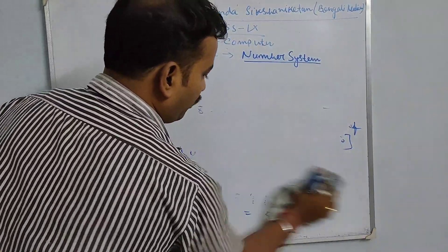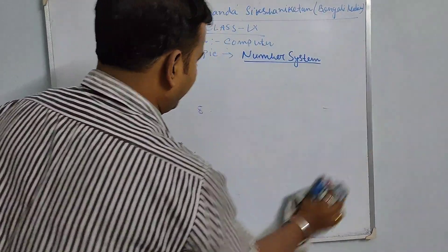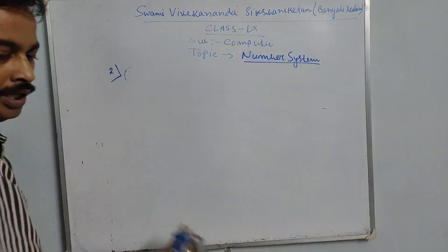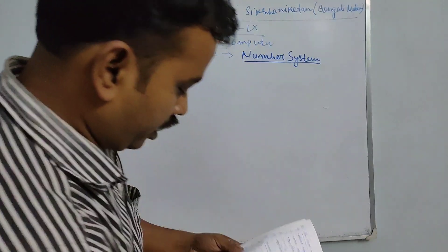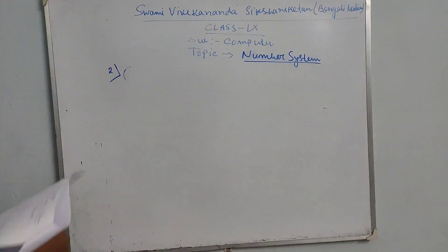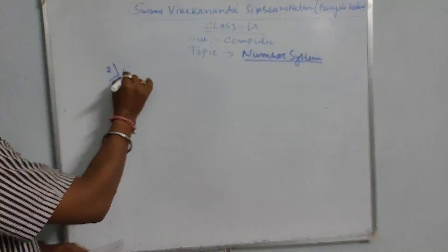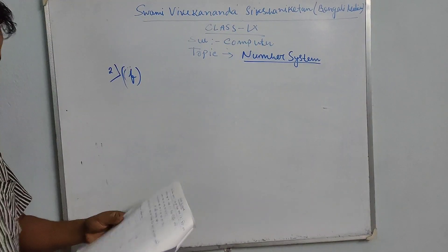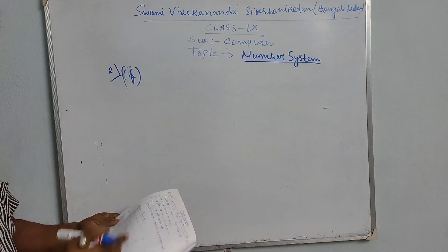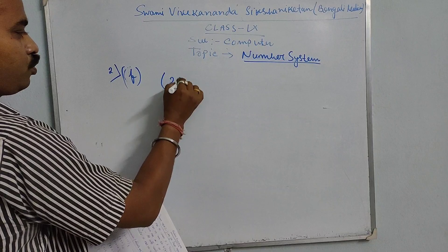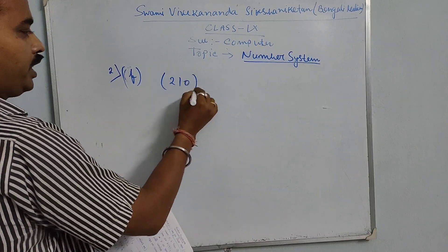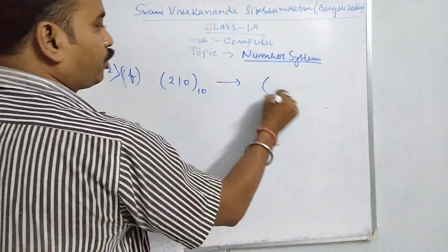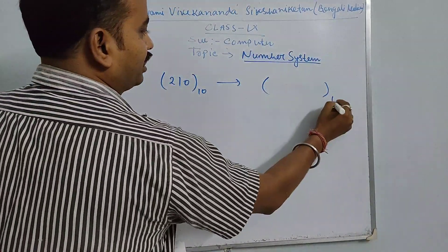In the next problem, it is given: how is a decimal number converted to hexadecimal? The number given is 210 — a decimal number to be converted to hexadecimal.